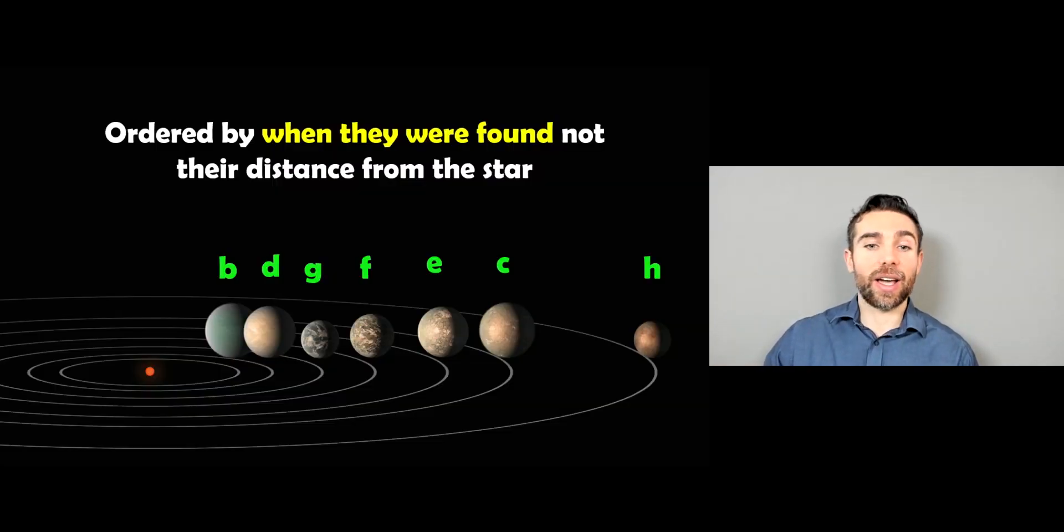And finally, they are ordered in when they were discovered, not their distance from the star. So it might be that the biggest planets are easier to actually detect and they might not be ordered biggest to smallest in the system. So you might find that when you look at the distances from the star, they might appear a bit more random.